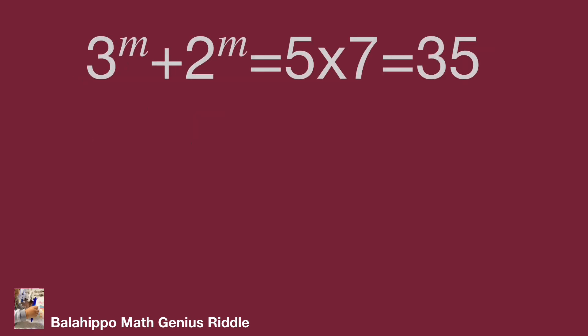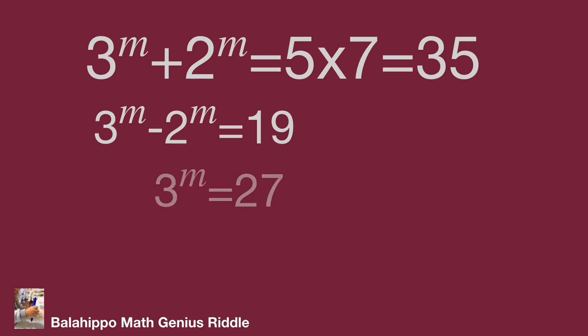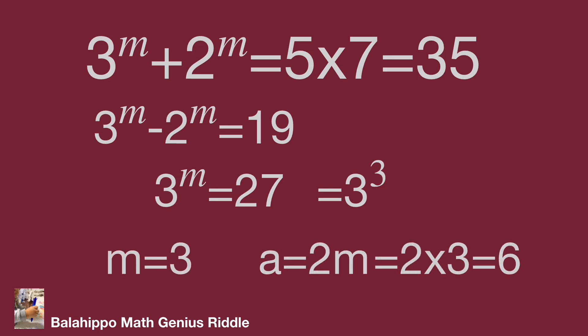Case 4: 3 power M plus 2 power M equals 35, and 3 power M minus 2 power M equals 19. Adding gives 2 times 3 power M equals 54, so 3 power M equals 27. And 27 equals 3 cubed, so M equals 3. Therefore A equals 2M equals 2 times 3, so A equals 6. That's the value of A. Do you get the same result? Hope you enjoy the video. Thank you.